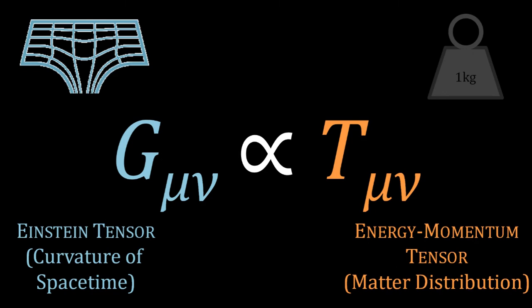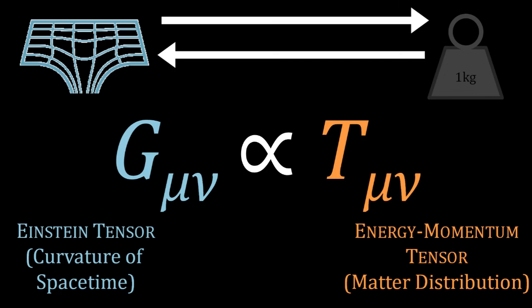The equation, and general relativity as a whole, was summarised in this way by physicist John Wheeler. Space-time tells matter how to move. Matter tells spacetime how to curve.